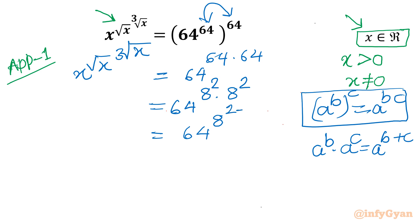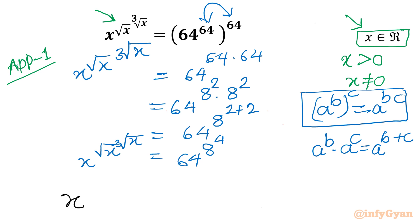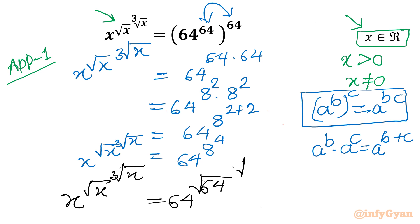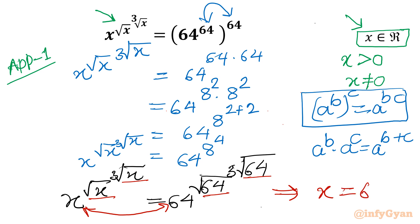So we write 2 plus 2, giving 64 power 8 power 4. The left-hand side is x root x cube root x. We need to write 8 and 4 in the appropriate form: 8 we can write as square root of 64, and power 4 we can write as cube root of 64. Now once we compare both sides, the base is identical — x and x — and the square root term gives 64, and the cube root term also gives 64.